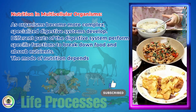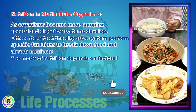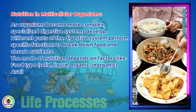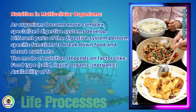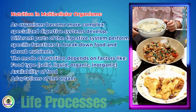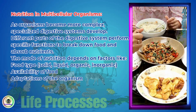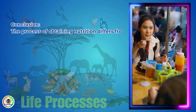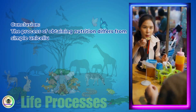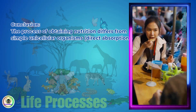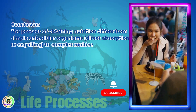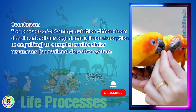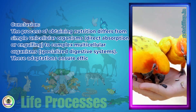The mode of nutrition depends on factors like food type (solid, liquid, organic, inorganic), availability of food, and adaptations of the organism. In conclusion, the process of obtaining nutrition differs from simple unicellular organisms — direct absorption or engulfing — to complex multicellular organisms with specialized digestive systems. These adaptations ensure efficient energy extraction and survival.